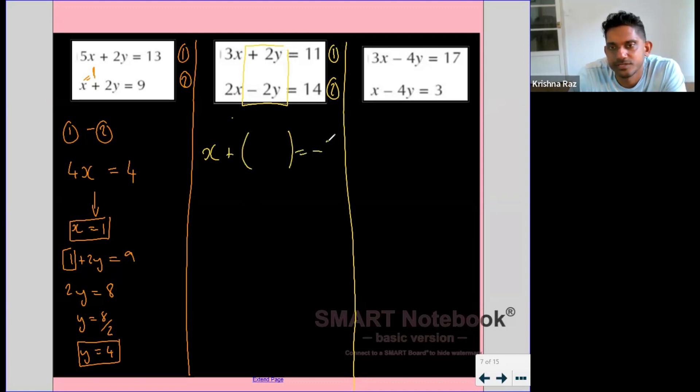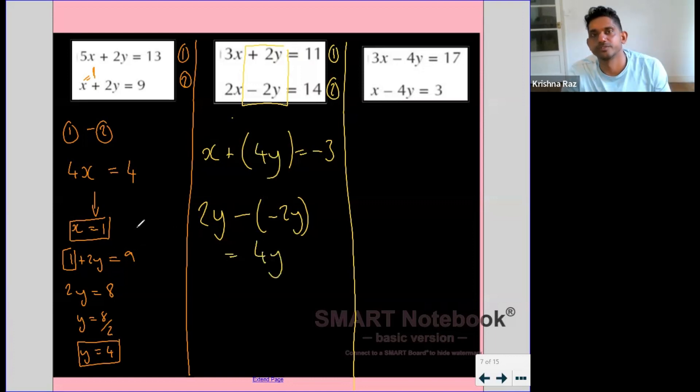So if we subtracted, we'd get 2y minus minus 2y. And does that give us 0? No, it gives us 4y. So that has not moved us forward.